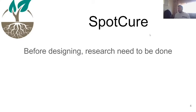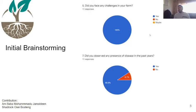Before designing a solution, we needed to do research. The first thing we did was a questionnaire. We asked 11 farmers — with the help of Baba and Shadrach, who went to different locations in Ghana — and conducted 22 questions. The first key finding: all farmers confirmed they faced challenges with crop diseases.